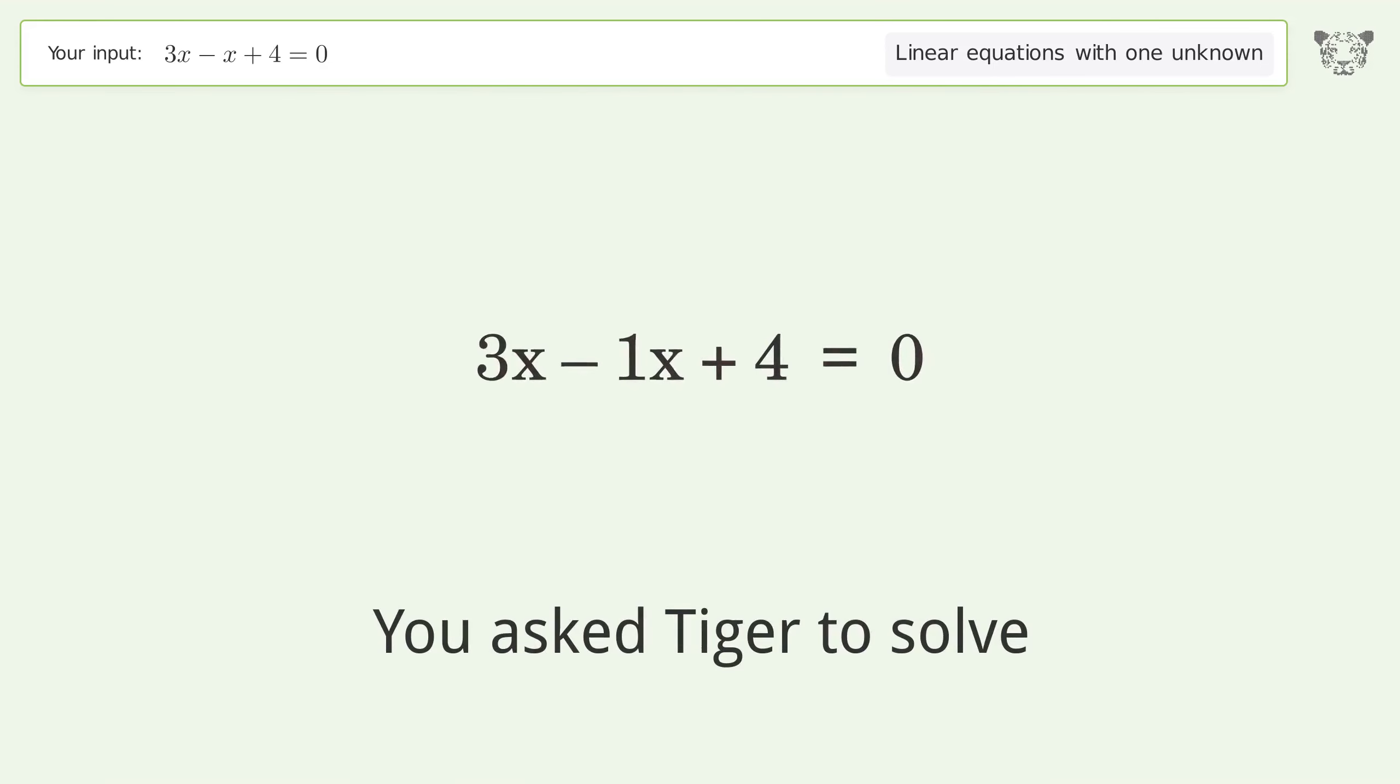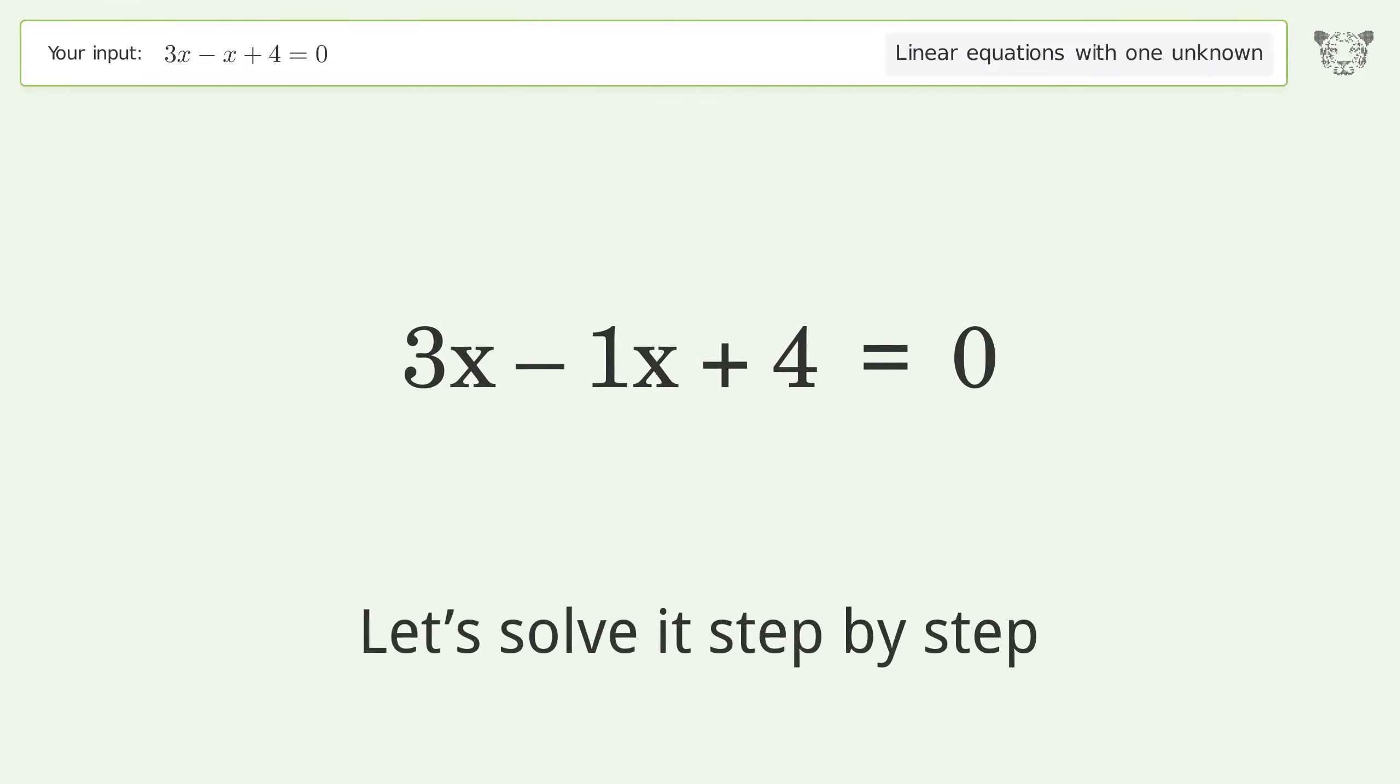You asked Tiger to solve 3x - x + 4 = 0. This deals with linear equations with one unknown. The final result is x equals negative 2. Let's solve it step by step. First, simplify the expression. Simplify the arithmetic.